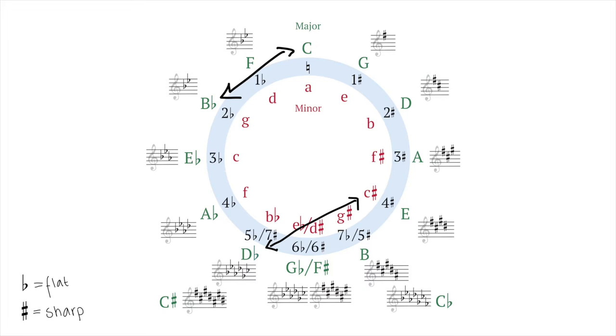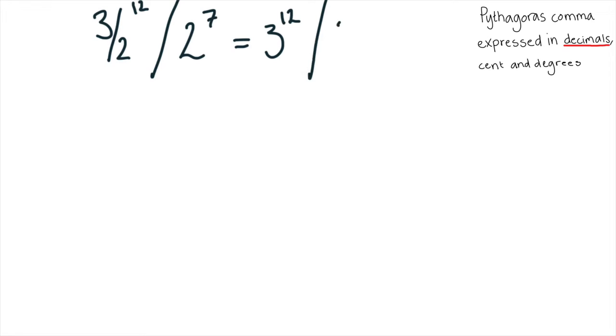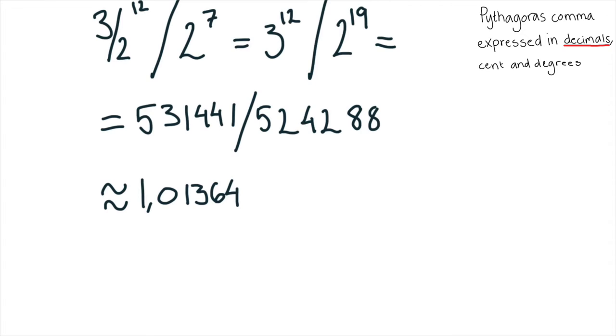And this ratio could be calculated as that 7 octaves removes from 12 fifths like this. 3 divided by 2 raised to 12 divided by 2 raised to 7 equals 3 raised to 12 divided by 2 raised to 19 equals 531,441 divided by 524,288 equals 1.01364.